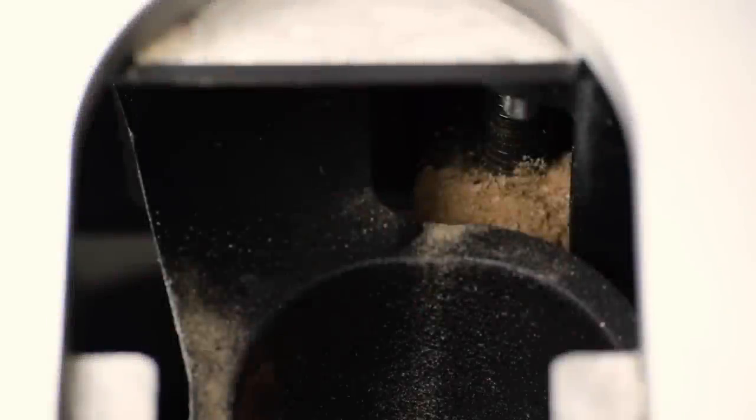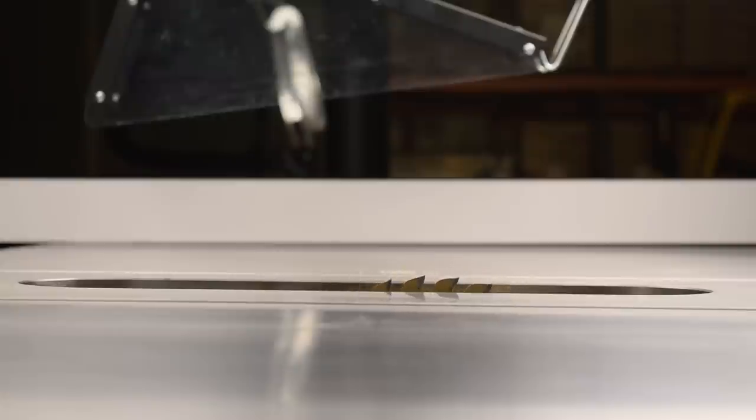Dust can build up on the front trunnion of the industrial cabinet saw and may interfere with the lower limit of the blade height. If you can no longer lower the blade completely below the table, dust buildup is typically the problem. This video shows you how to remove the dust and restore the lower elevation limit of the blade.